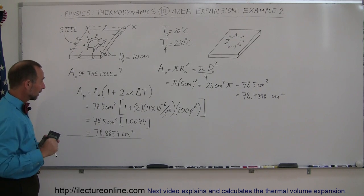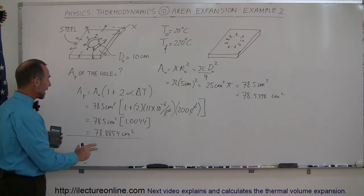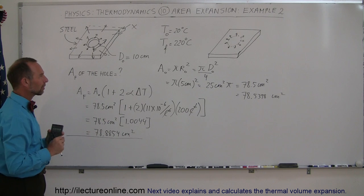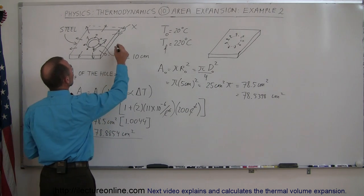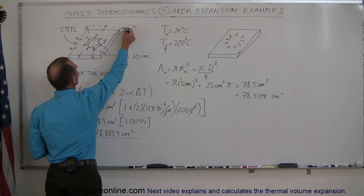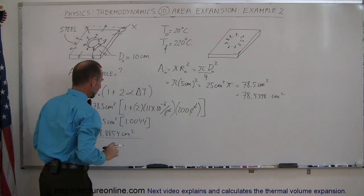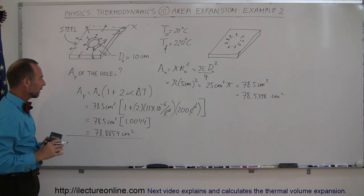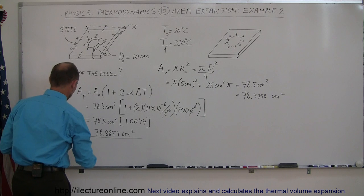So what I'm going to do now is figure out what my error is by using this equation, because remember that was an approximation. What we did was we ignored the little corner of the area expansion, and I'm going to now include that.